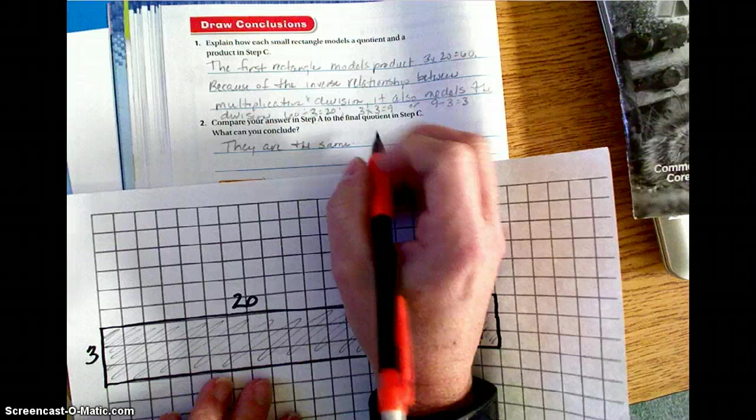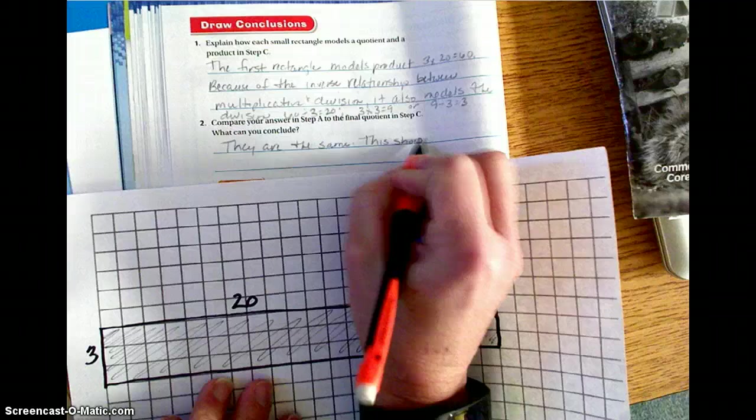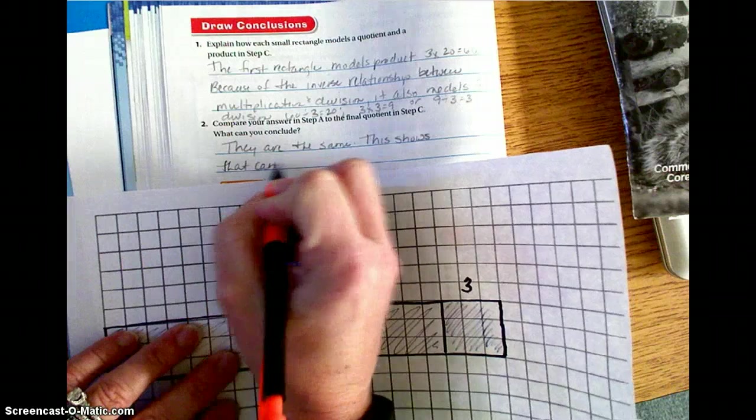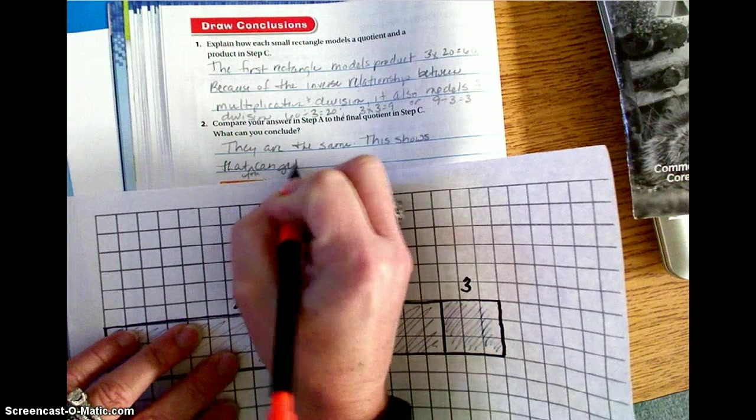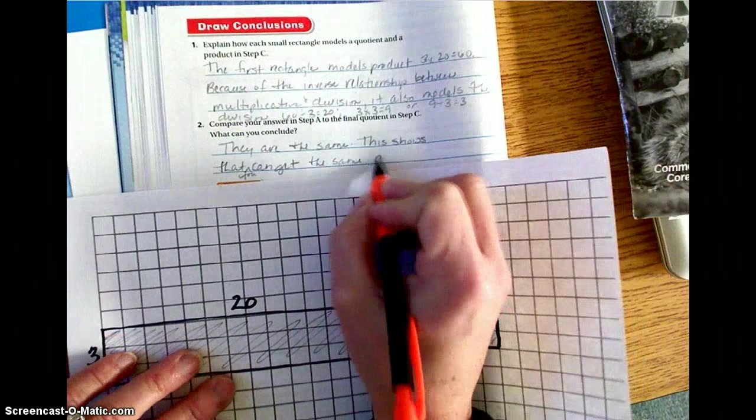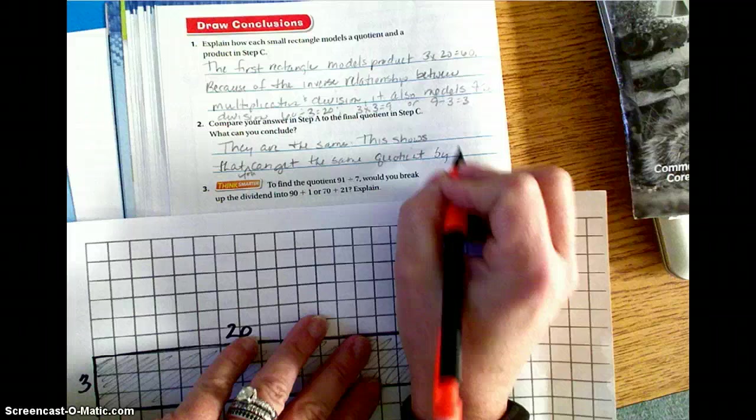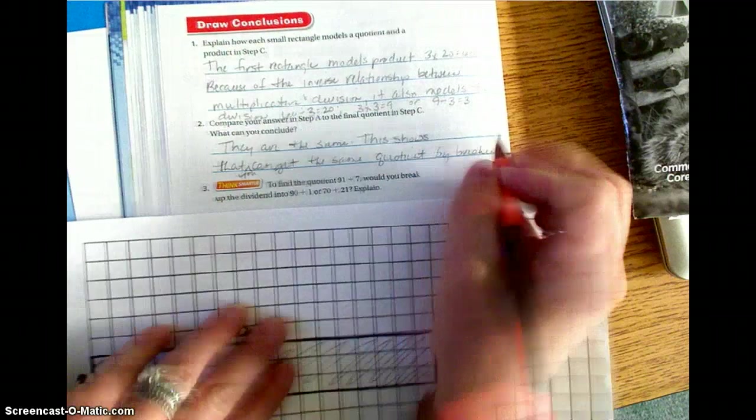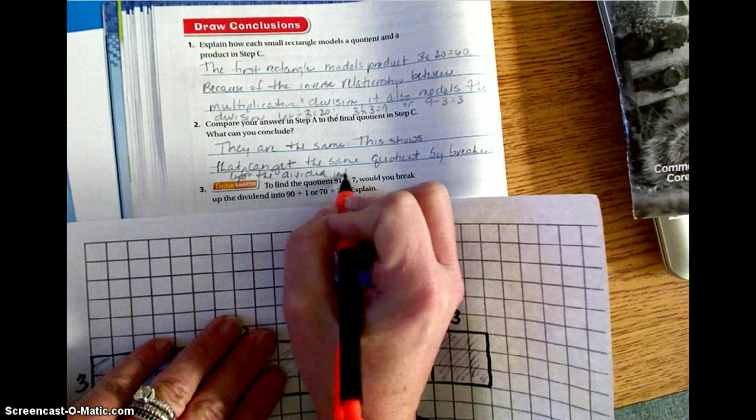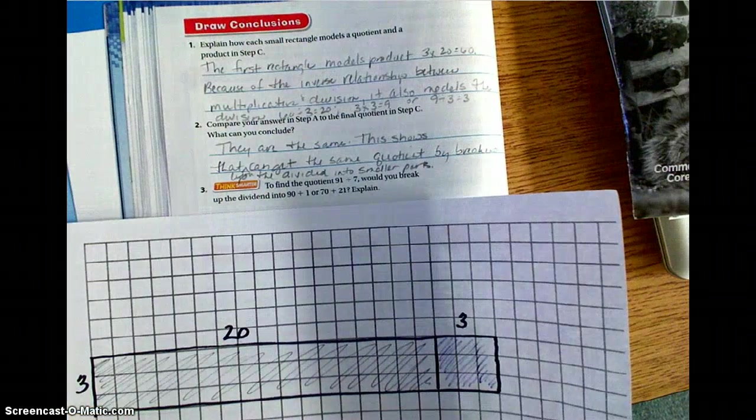And we know this, this also shows us, so this shows us, this shows that you can get the same quotient by breaking up the dividend into smaller parts. Very good. All right, moving on.